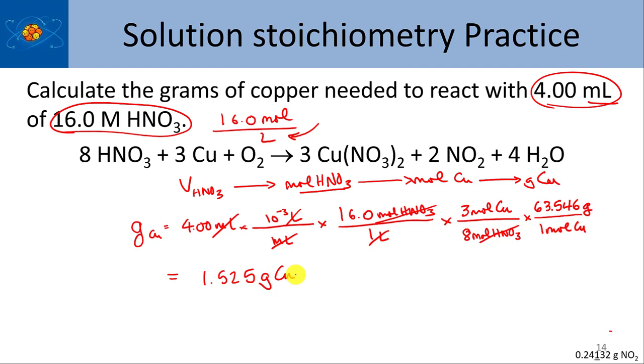This will react with 4 mLs of concentrated, that's 16 molar, concentrated nitric acid. For sigfigs, going back through the numbers, we have 3 sigfigs in the 4 mils and 3 sigfigs in the 16. And all the other conversions are more precise, or they're exact, so we'll round this number to the 3 sigfigs. And so that leaves 1.53 grams.